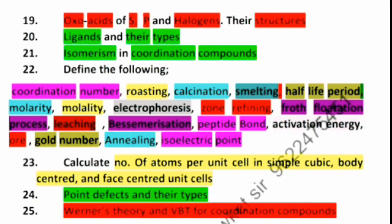It is important and its types like structural isomerism, optical isomerism, and cis-trans isomerism. Some terms for one mark questions like coordination number, roasting, calcination, smelting, half-life period, molarity, molality, concentration terms, electrophoresis, zone refining, froth flotation process, leaching, Bessemerization, peptide bond, activation energy, ore, golden number, annealing, isoelectric point, and also how to calculate number of atoms in unit cells for simple, face-centered, and body-centered unit cells.